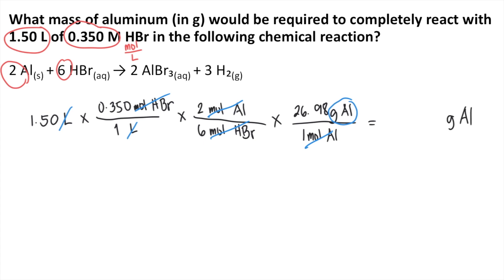So all you have to do now is to calculate everything using your calculator. So that's 1.50 times 0.350 divided by 1 times 2 divided by 6 times 26.98 divided by 1. And this will give you approximately 4.72, if you round it off. So 4.72 grams of aluminum. And that is the answer to the question.